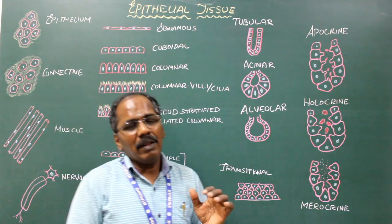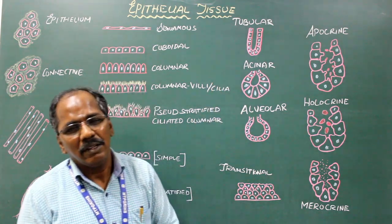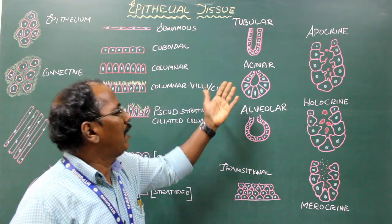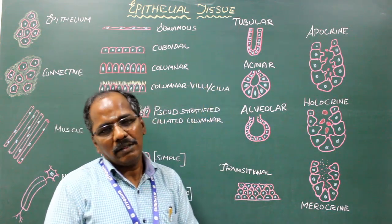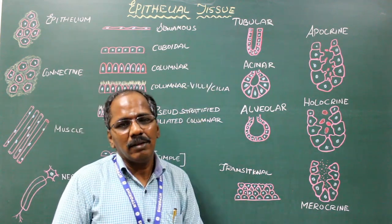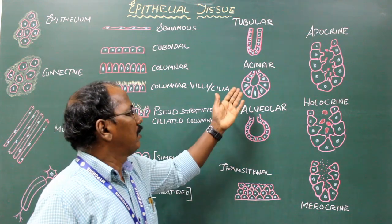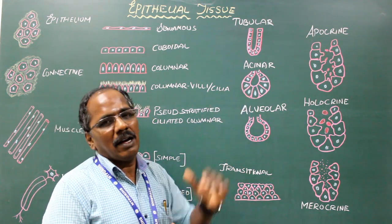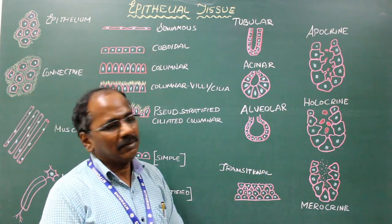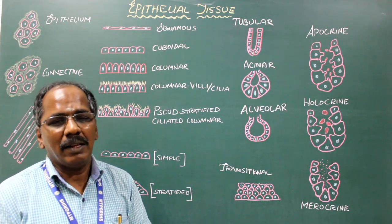Depending upon the shape of the secretory portion, glands may be divided into tubular, acinar, and alveolar types. Tubular — example: Brunner's glands and gastric glands. Acinar — example: salivary glands. Alveolar — example: mammary glands.